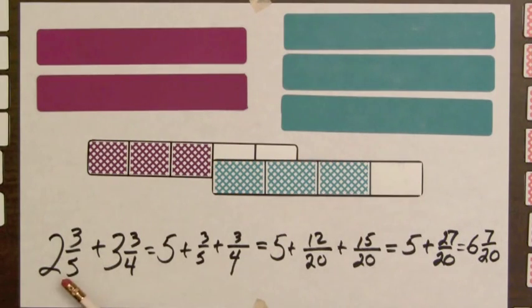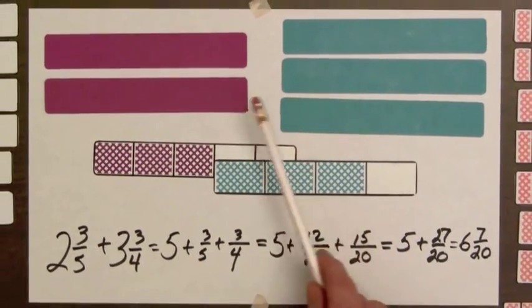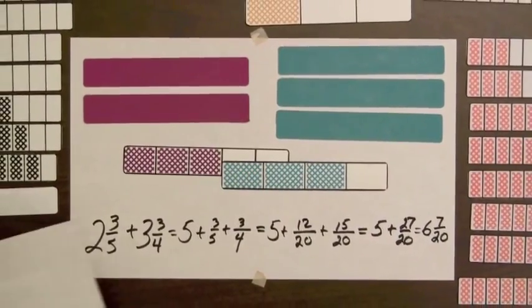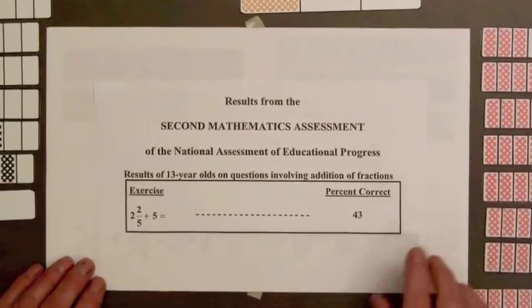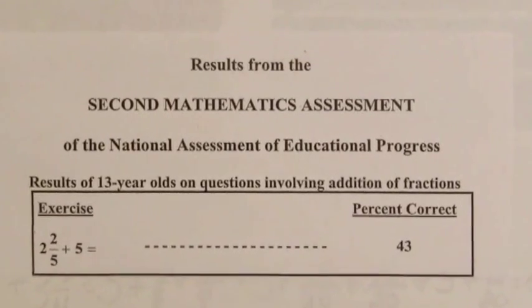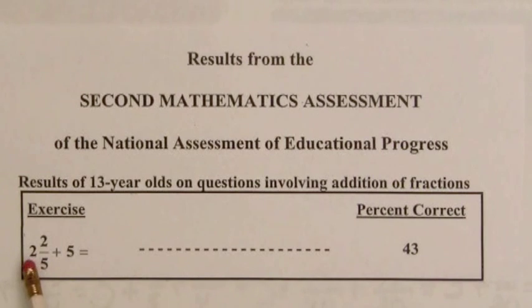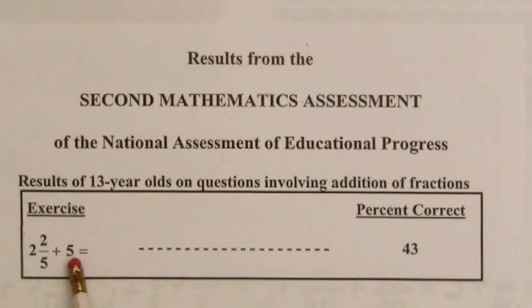So we've seen two examples now of adding mixed numbers where we combine sets of bars for those numbers. Now do students really need this kind of simplicity, especially for combining whole numbers? Well, here's a test result that indicates they do. This question, compute the sum two and two-fifths plus five, was given to thirteen-year-old students across the United States. Forty-three percent were able to answer this correctly. And that means that more than half of these students don't realize that in this situation you add the whole numbers to get seven and you keep the fraction.